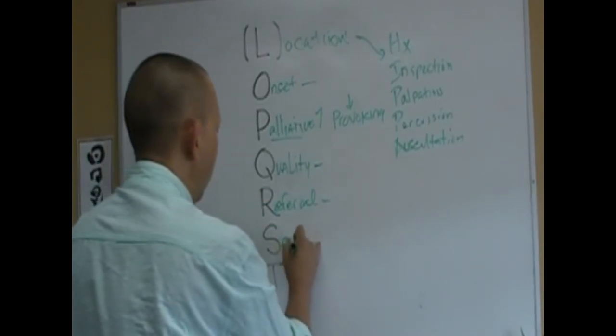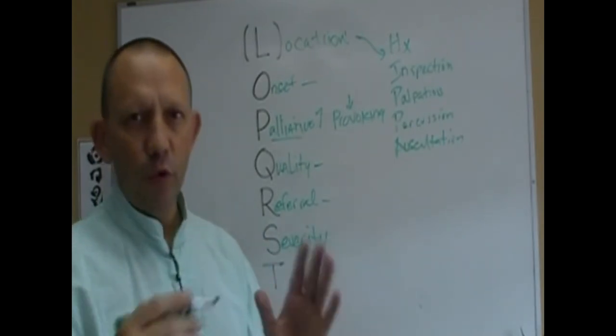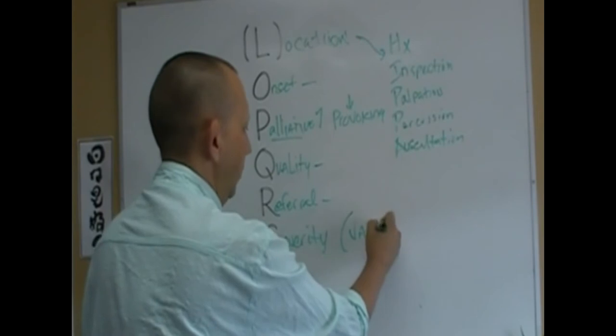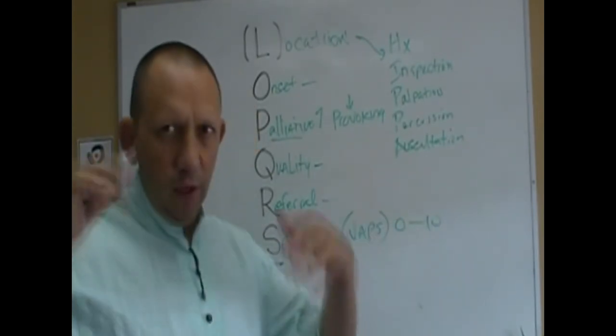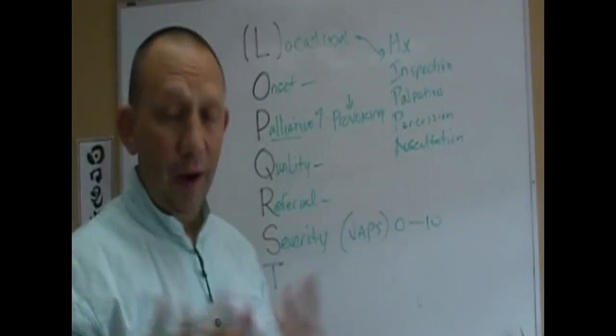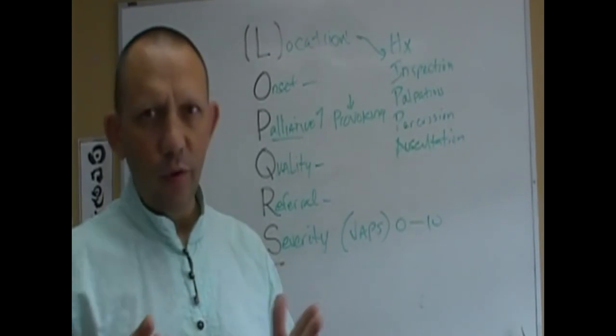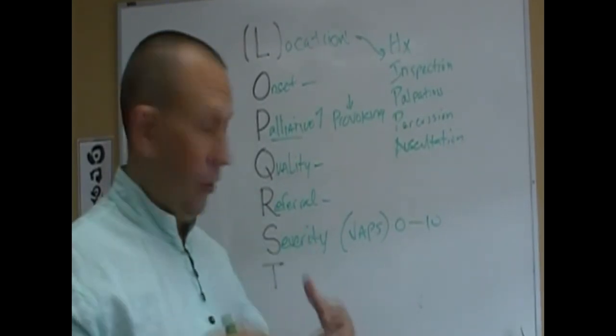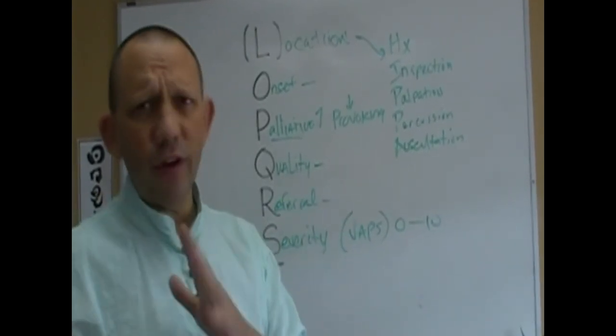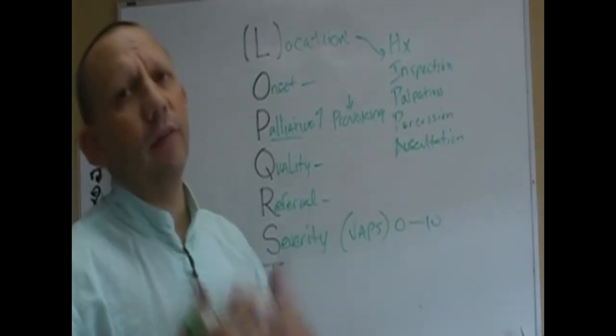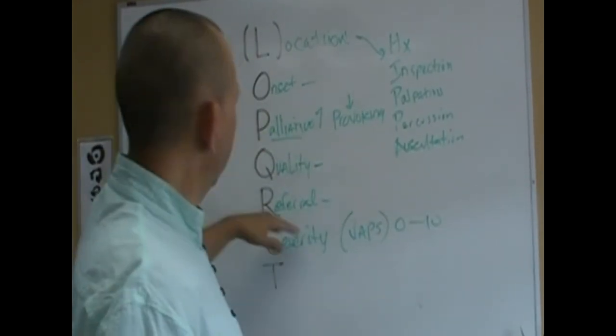Severity. This is where you want to get into the visual analog pain scale, VAPS. You've seen that one before, it goes from zero to ten. Ten being worst pain possible, can't sleep, screaming and hollering. Zero is no pain at all. Most people are more than a two if they're coming in to be treated. Seven, you're starting to lose sleep, it's waking you up at night. This is totally subjective.